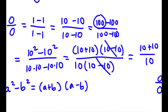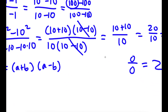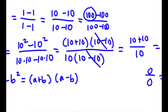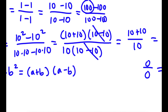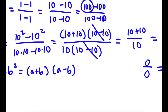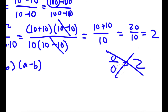Obviously, 0 over 0 is not equal to 2. The mistake in this proof is right here — when I canceled out (10 minus 10) over (10 minus 10). What is 10 minus 10? It's 0. So I'm technically canceling out 0 over 0. Remember, 0 over 0 is not equal to 1, so I can't cancel these out — that's implying 0 over 0 is 1, which it's not. So 0 divided by 0 is not 2.